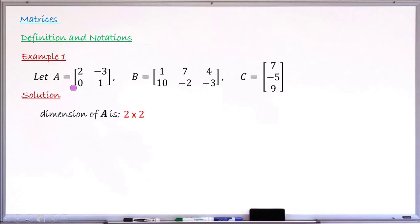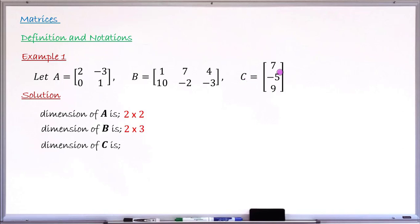Moving to matrix B, checking how many rows and columns: there are two rows and three columns. So the dimension of matrix B is 2 × 3 — rows first, then columns. For matrix C, counting the rows gives three rows and just one column. Therefore the dimension of matrix C is 3 × 1, meaning it has three rows and one column.